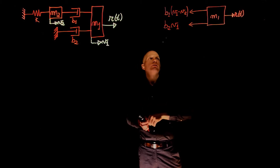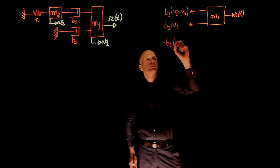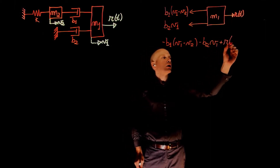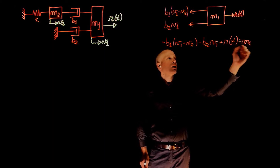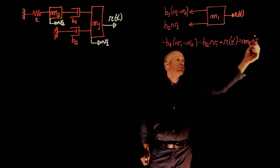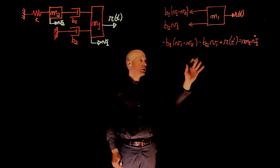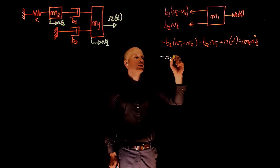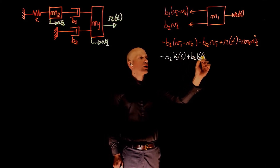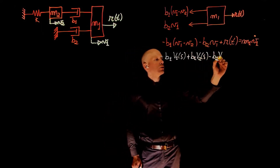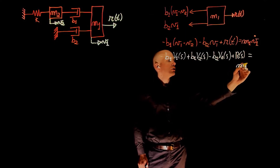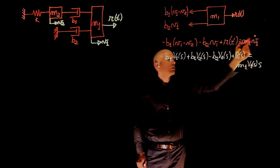The sum of forces is: negative b1*(v1 minus v2) minus b2*v1 plus r(t), and this equals m1 times its acceleration. Since we are dealing with velocities, we can write m1 times v1-dot. Now we take the Laplace transform of this expression, which gives: negative b1*V1(s) plus b1*V2(s) minus b2*V1(s) plus R(s) equals m1*s*V1(s).